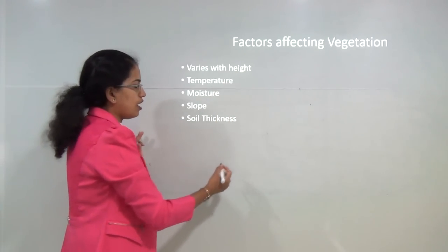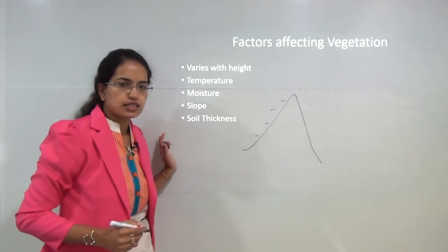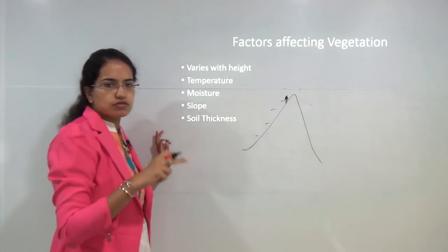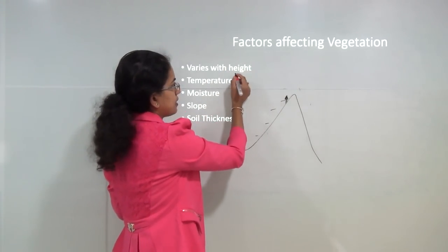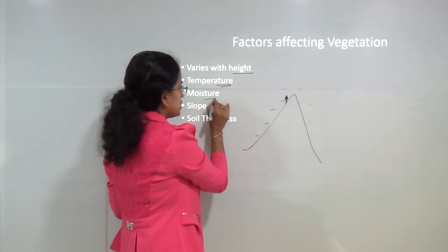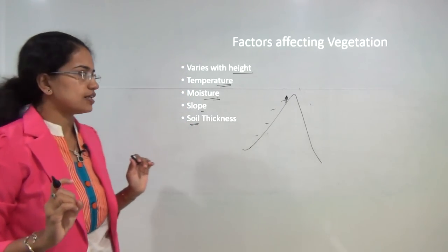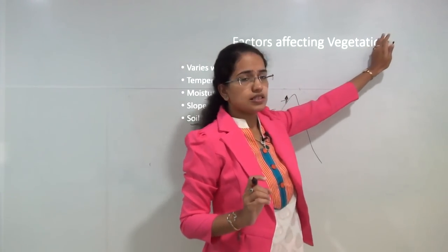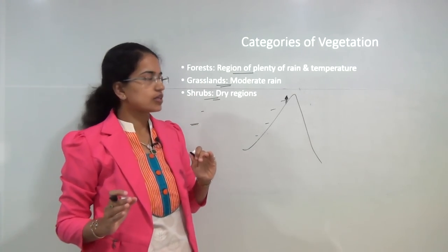If I move up on a mountain, you would have changes in the type of trees seen. Towards the top I would have coniferous forest — that is, conical trees. So vegetation varies with height, it also varies with temperature, moisture, slope conditions, and the amount or thickness of soil present. These are five primary factors that affect vegetation, and based on these five factors you have the three categories of vegetation.